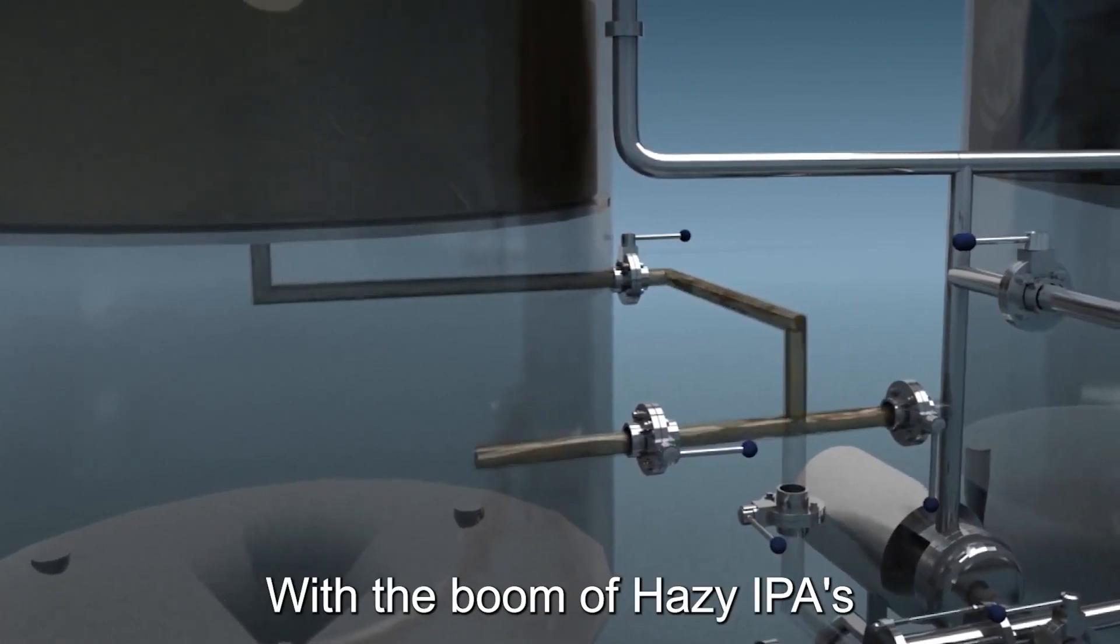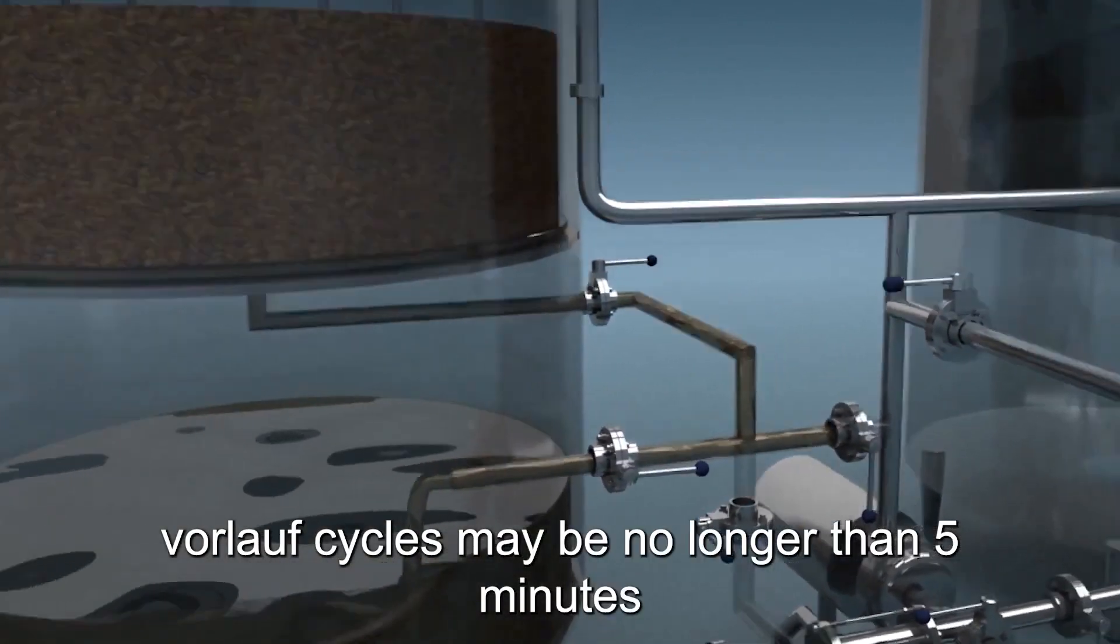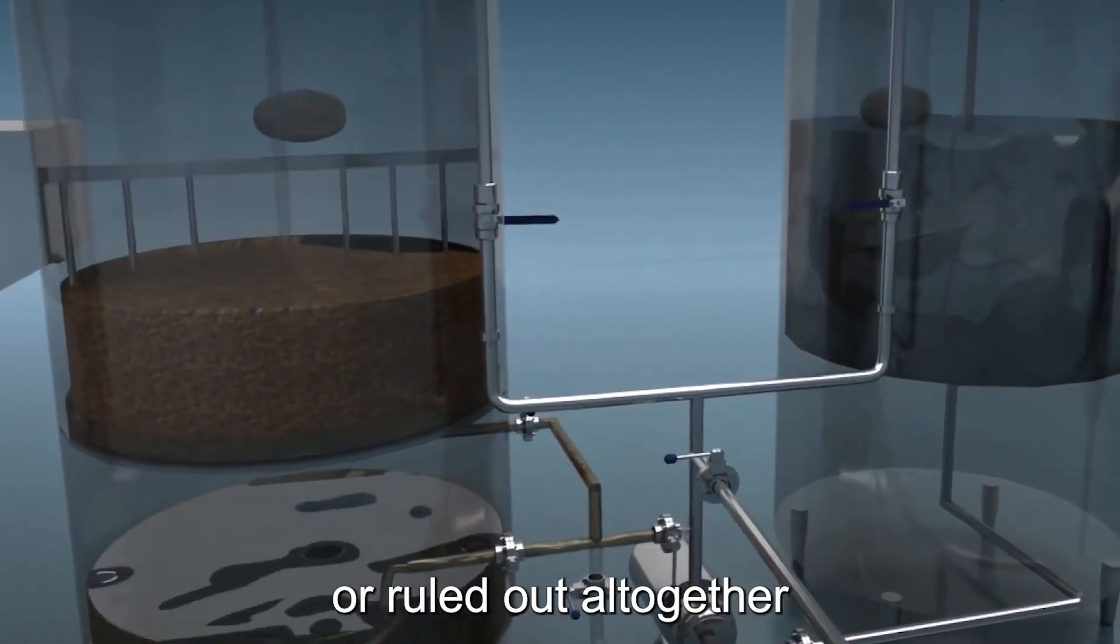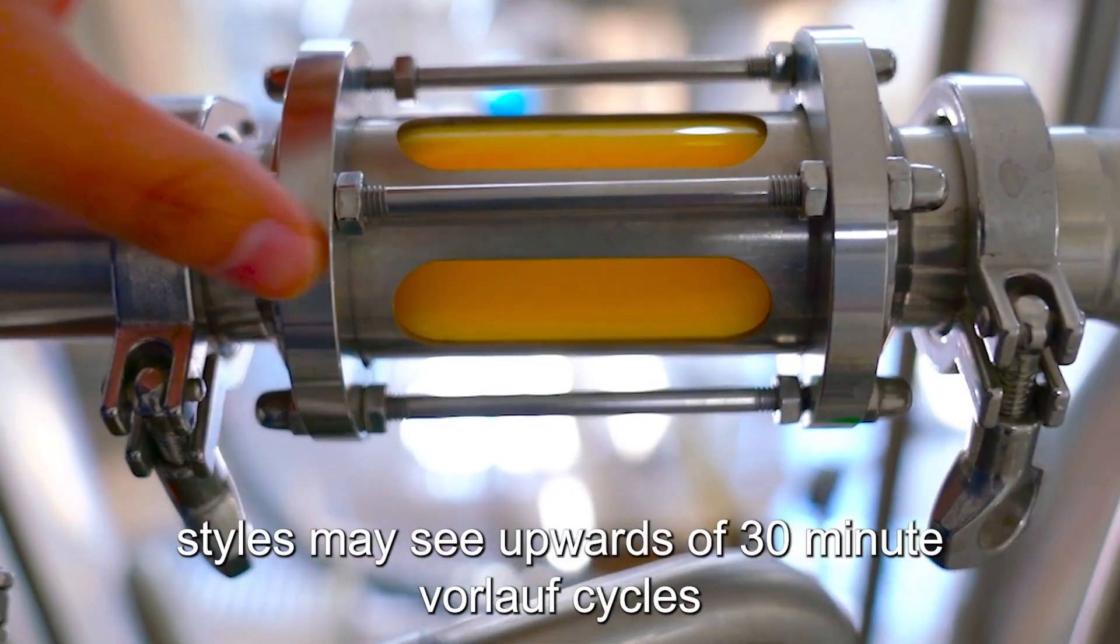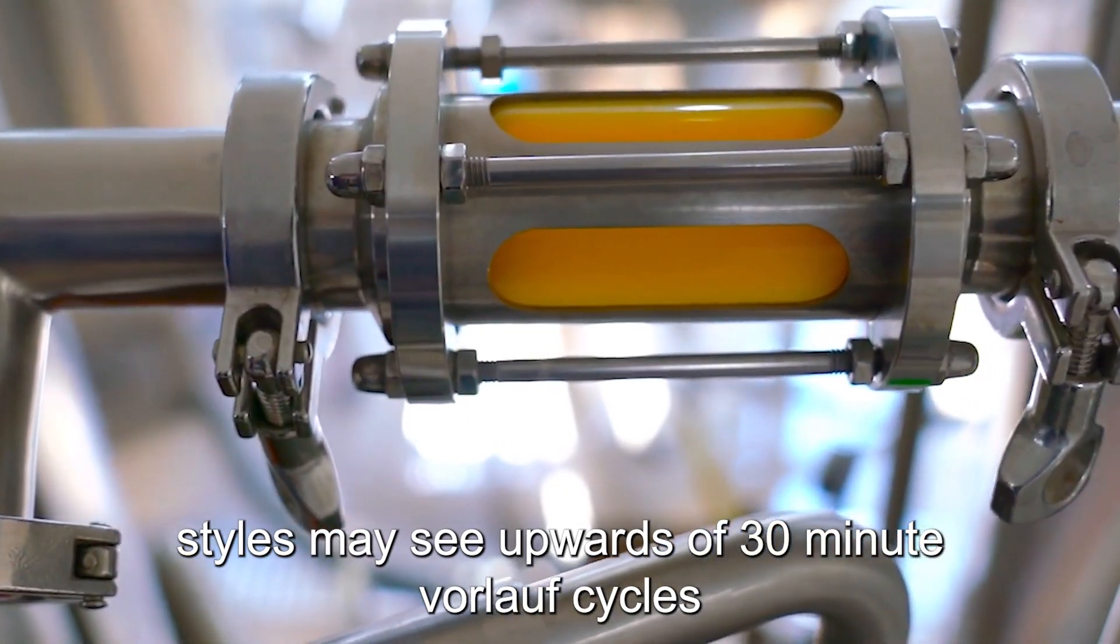With the boom of hazy IPAs, vorlauff cycles may be no longer than 5 minutes or ruled out altogether. Likewise, brilliantly clear styles may see upwards of 30-minute vorlauff cycles.